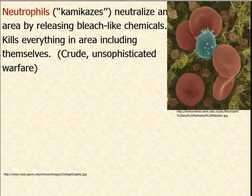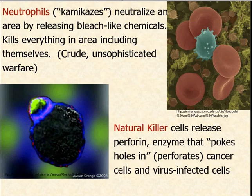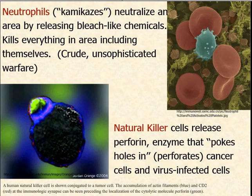It's crude, unsophisticated warfare — not tailor-made for a specific disease. Any time there are infected cells, the neutrophils come by and drop their bleach bombs, so to speak. The other kind of cell in this section are the natural killer cells. Natural killer cells release an enzyme called perforin — similar to the word perforate — which pokes holes in cancer cells and virus-infected cells. Natural killer cells move in any time there's a cancer cell or a virus-infected cell; it's not tailor-made to any particular virus.